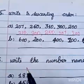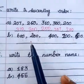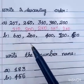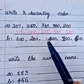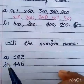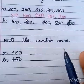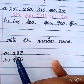Descending order is the biggest number first. Question b, 600, 200, 400, 100, 500. This is the biggest number starting from smallest number. Then, write the number name. Number name is 183.